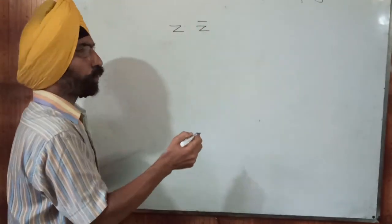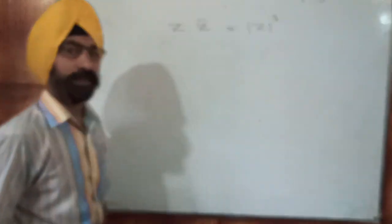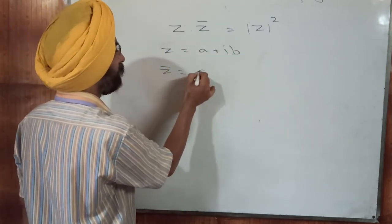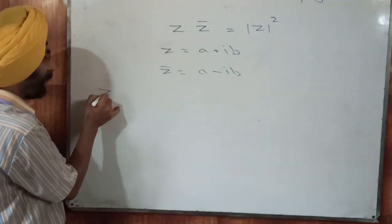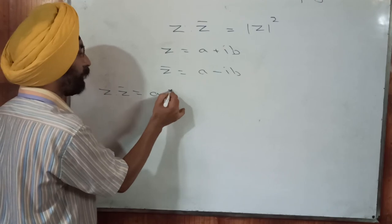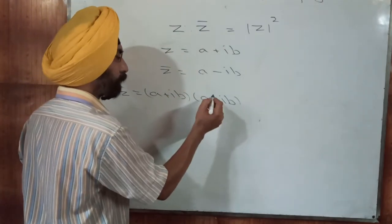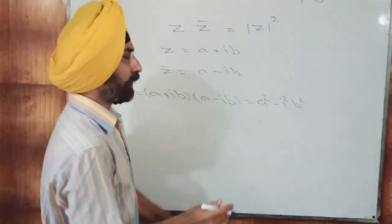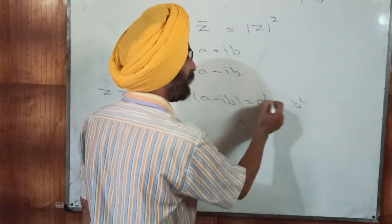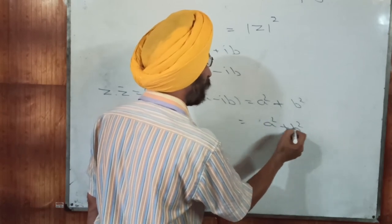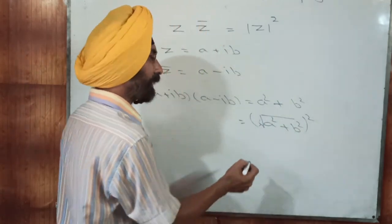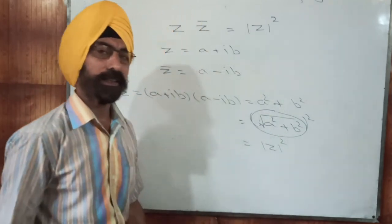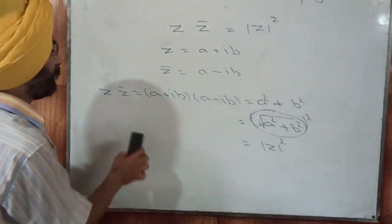The third property is that Z multiplied by its conjugate Z bar equals mod Z squared. Verification: if Z equals A plus iota B and Z bar equals A minus iota B, then Z times Z bar equals A squared minus iota squared B squared equals A squared plus B squared, which is the square root of A squared plus B squared, all squared — that is mod Z squared. So Z times Z bar equals mod Z squared.